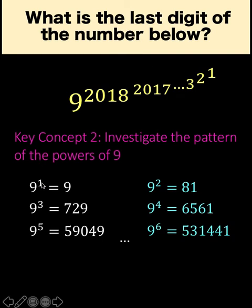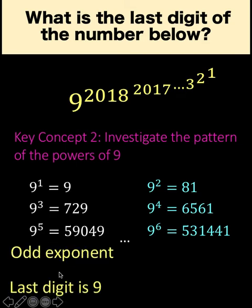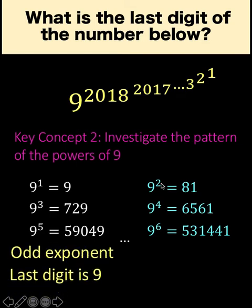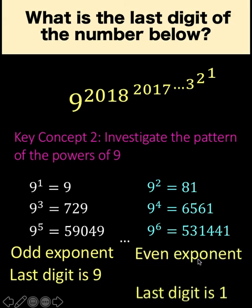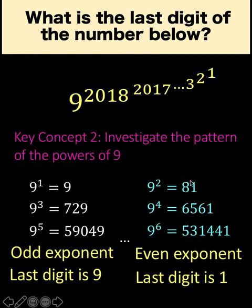Notice that when the exponents are odd numbers — 1, 3, 5 — the last digits are 9, 9, and 9. So when the exponents are odd, the last digit is 9. When the exponents are even — 2, 4, 6 — notice that the last digits are all equal to 1. So when the exponent is even, evaluating the exponential expression results in a number with 1 as the last digit. Finding the last digit is now narrowed down to knowing the parity of the exponent of 9 — whether it results in an even number or an odd number.